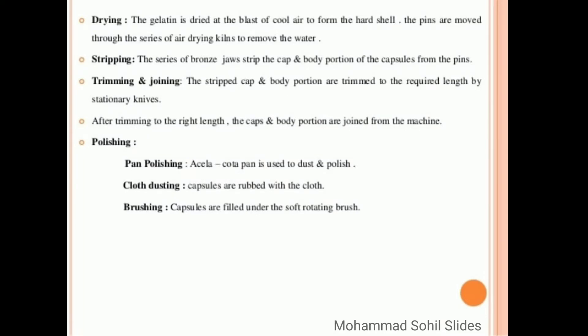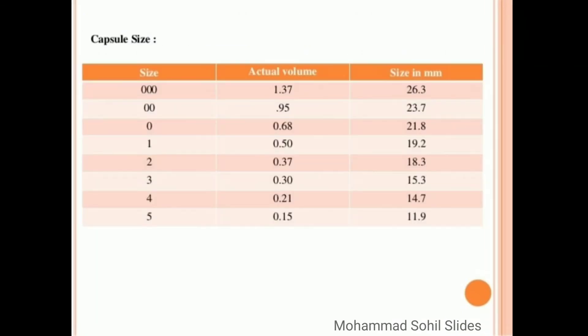Then last is polishing. In polishing, three steps are followed: first pan polishing—a pan is used to dust and polish. Then second, cloth dusting—capsules are rubbed with the cloth. And last is brushing—capsules are filled under the soft rotating brush.